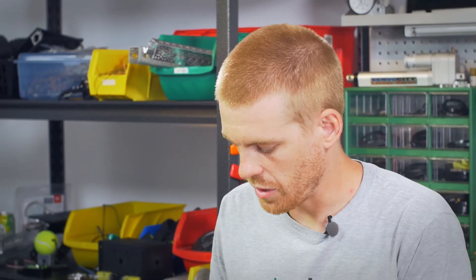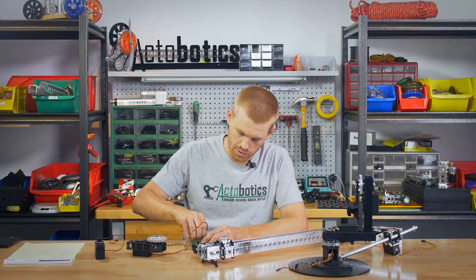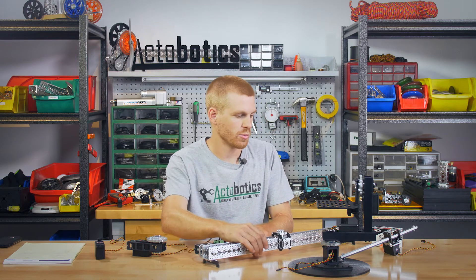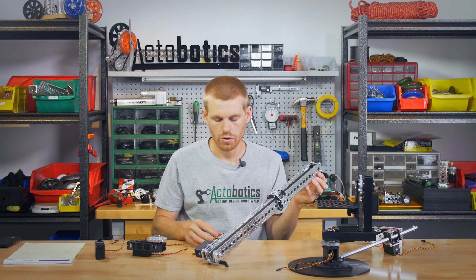Next we have a 785 slider kit. The slider is similar to the gear rack in that it's creating linear motion from a rotational motion out of the servo.